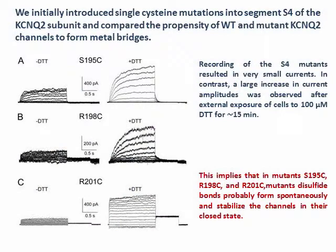In principle, if two externally accessible cysteines are close enough to each other, they should be able to form metal bridges after external application of cadmium ions, or to form covalent disulfide bonds. The wildtype KCNQ2 subunit has only two externally accessible cysteines: cysteine-106 in S1 and cysteine-242 in S5. We initially introduced single cysteine mutations into the S4 segment of the KCNQ2 subunit and compared the propensity of wildtype and mutant KCNQ2 channels to form metal bridges after external application of cadmium.